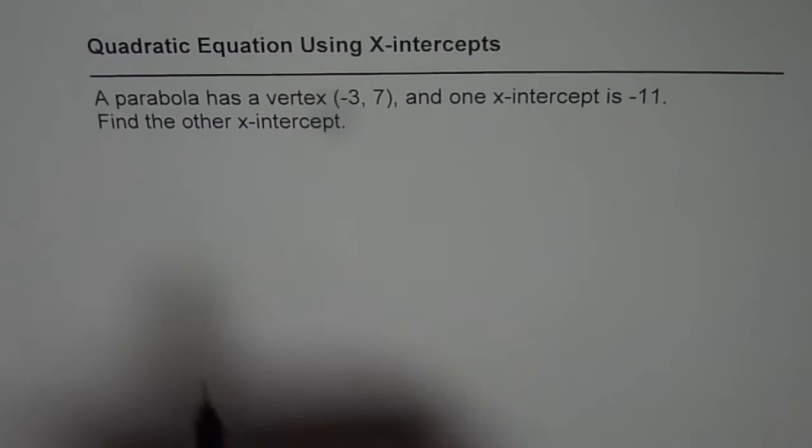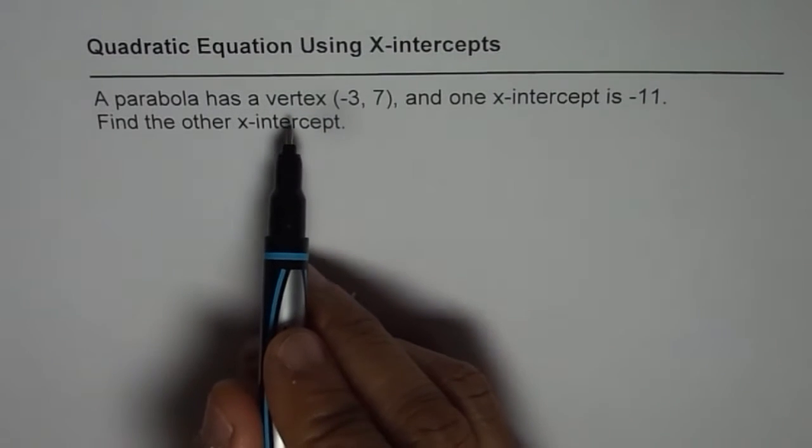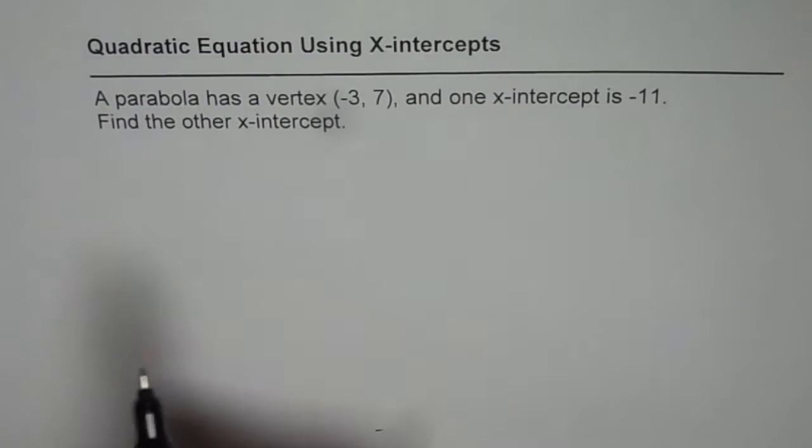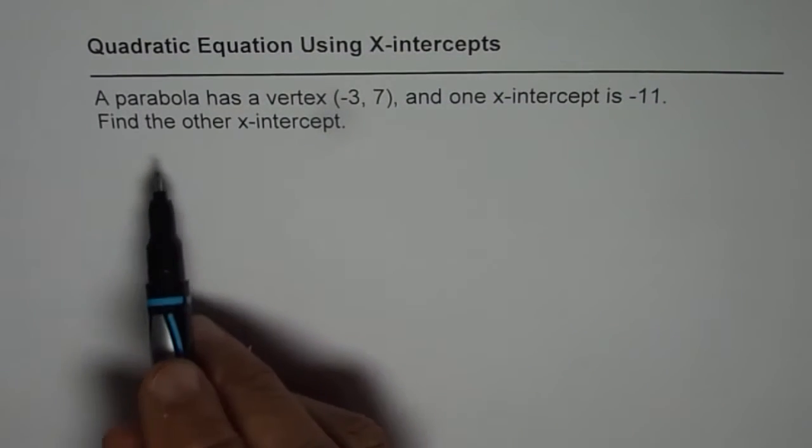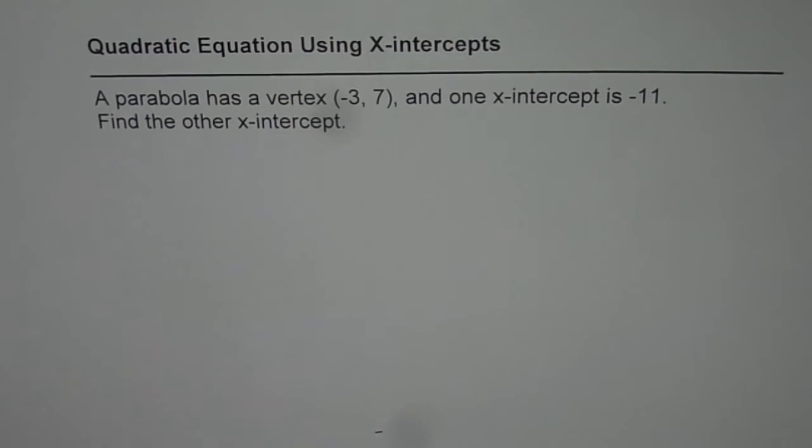The question here is: a parabola has a vertex (-3, 7) and one x-intercept is -11. Find the other x-intercept. That is the question for you. You can pause the video and answer the question.